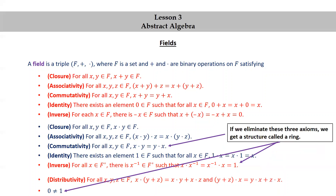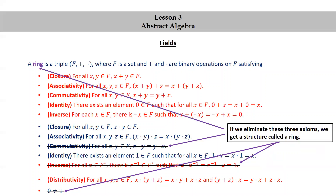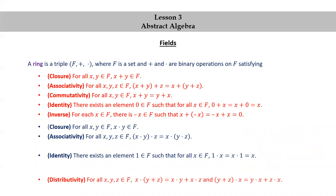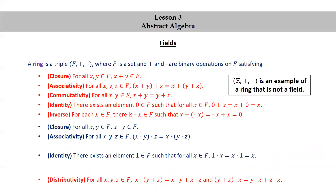If we eliminate three of the axioms — namely commutativity, the inverse property for multiplication, and 0 ≠ 1 — we get a structure called a ring. A ring satisfies most of the field axioms, but not all of them. We've seen rings in detail in the last section. The set of integers together with addition and multiplication is an example of a ring that is not a field.